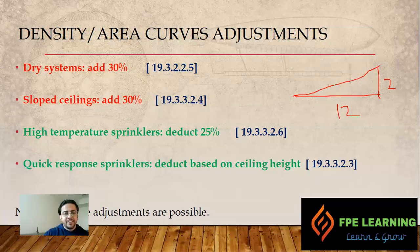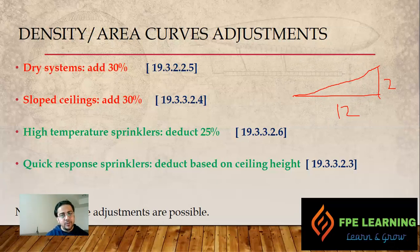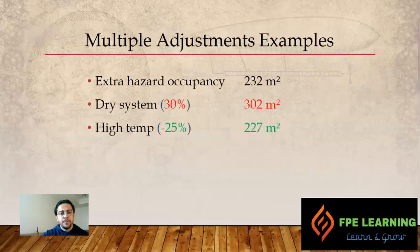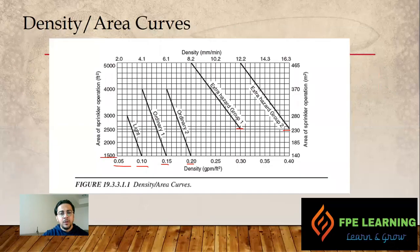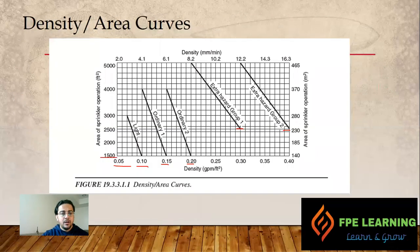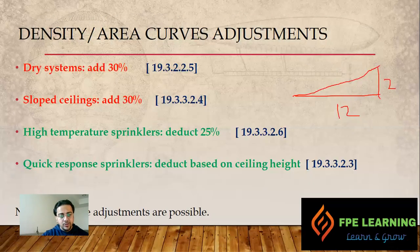The fourth scenario is quick response sprinklers, where the deduction is based on ceiling height as per NFPA 13 Section 19.3.3.2.3. Before looking at the curve, let me first cover the conditions that must be met to use this reduction.